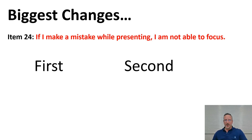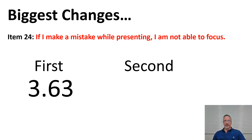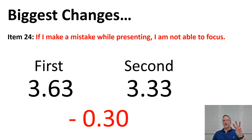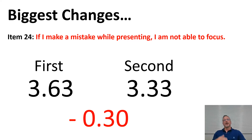Our final big change was item 24 — 'If I make a mistake while presenting, I am not able to focus.' In the first administration at the beginning of the first semester, the score was 3.63. After one full semester of instruction, it fell to 3.33, a change of minus 0.30, which was almost three times the average variance. We believe this lowering of anxiety after one semester of instruction shows that the effect of our class allowed students to feel less anxiety when making mistakes and feel more comfortable proceeding. This was a positive trend, and hopefully it will continue into the next semester.